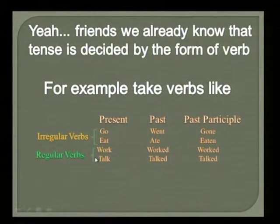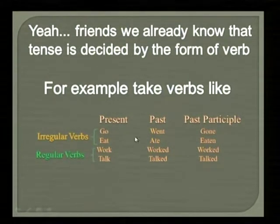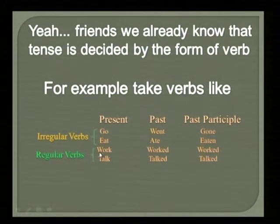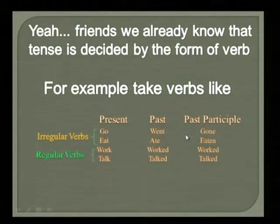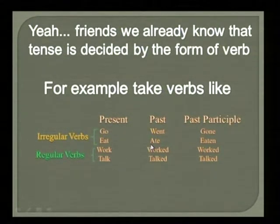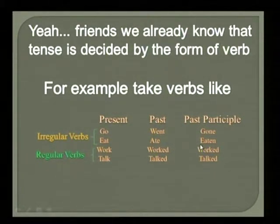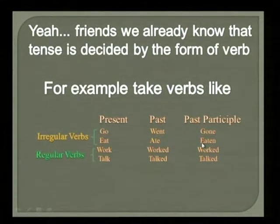Now let us discuss the next verb: eat, ate, eaten. 'Eat' is the present form, 'ate' is the past form, and 'eaten' is the past participial form. These verbs are called irregular verbs because there is a change between the present, past, and past participial forms — there is no regularity between them.